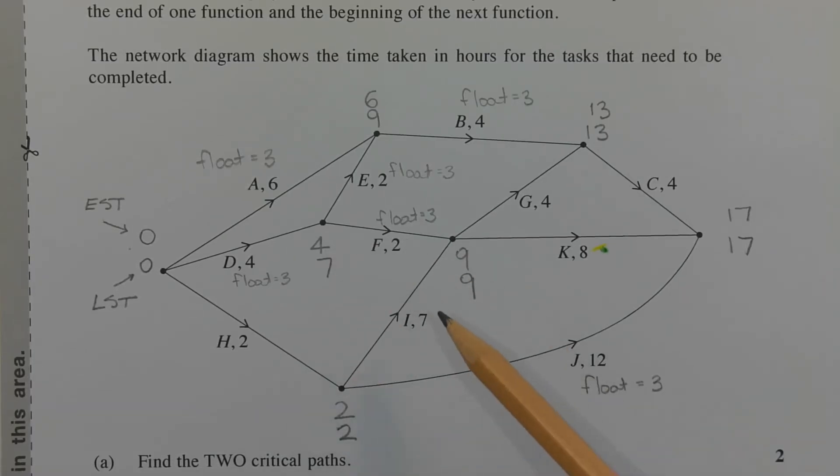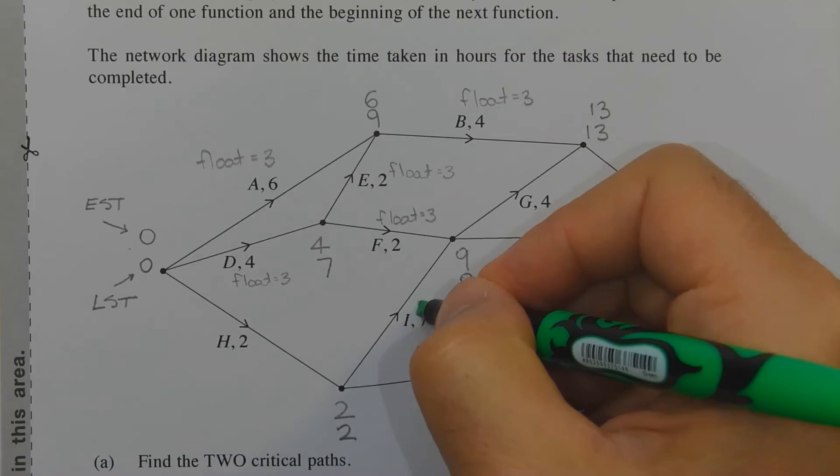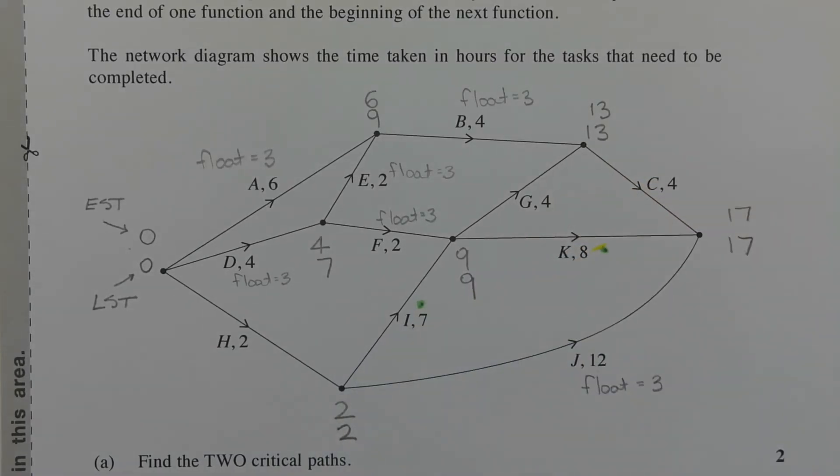Okay. Let's have a look at task I. So nine minus seven minus two also gives us a float time of zero. So this task is also on a critical path. Let's try one more. Let's look at task B. Thirteen minus four minus six gives us a float time of three. So task B is not on a critical path. And I've marked the rest accordingly. So just continuing on the same way, we end up with these float times that I've marked next to each of these tasks.